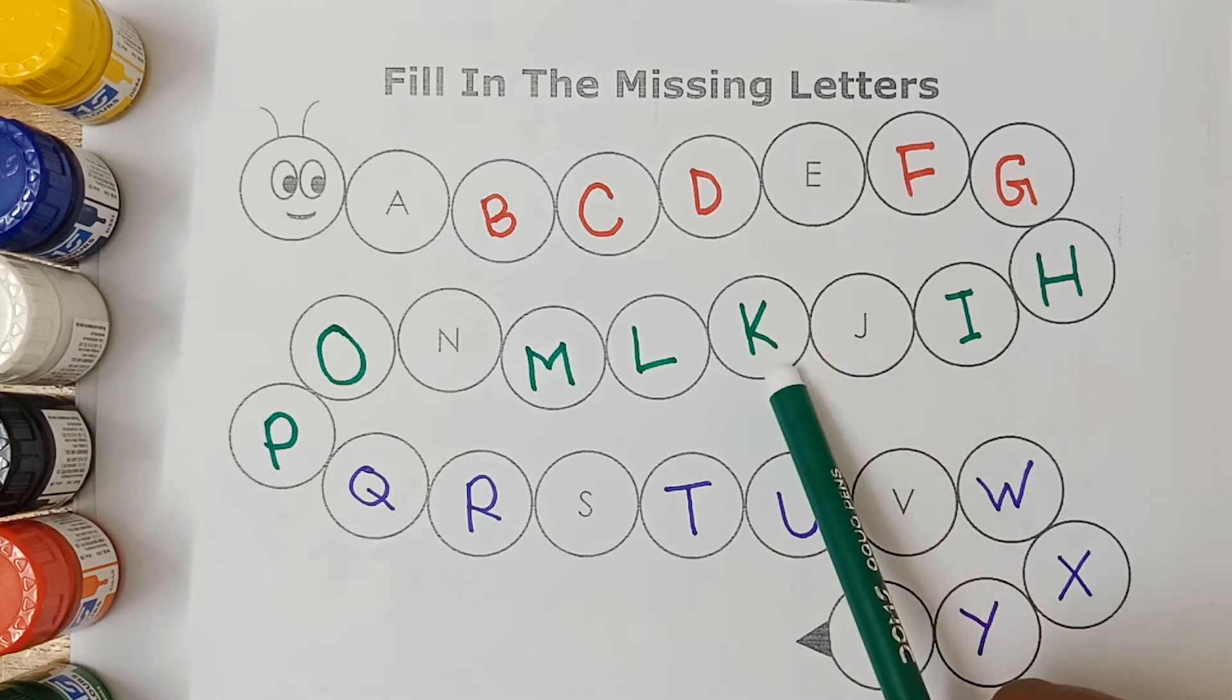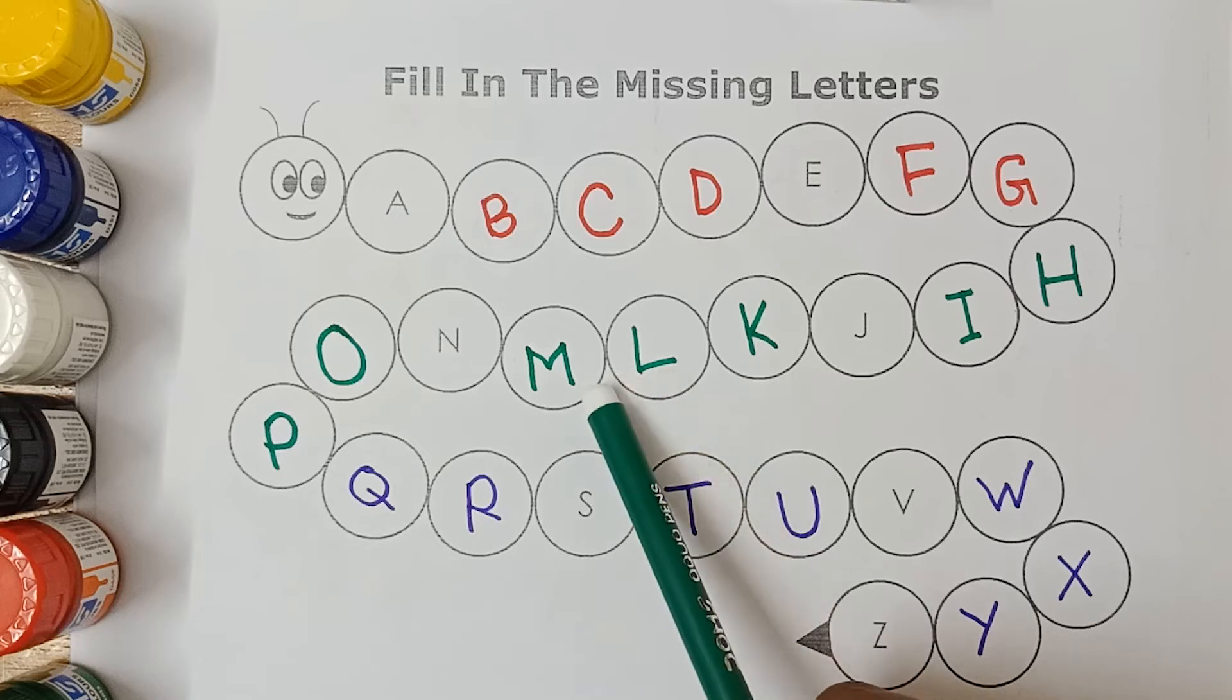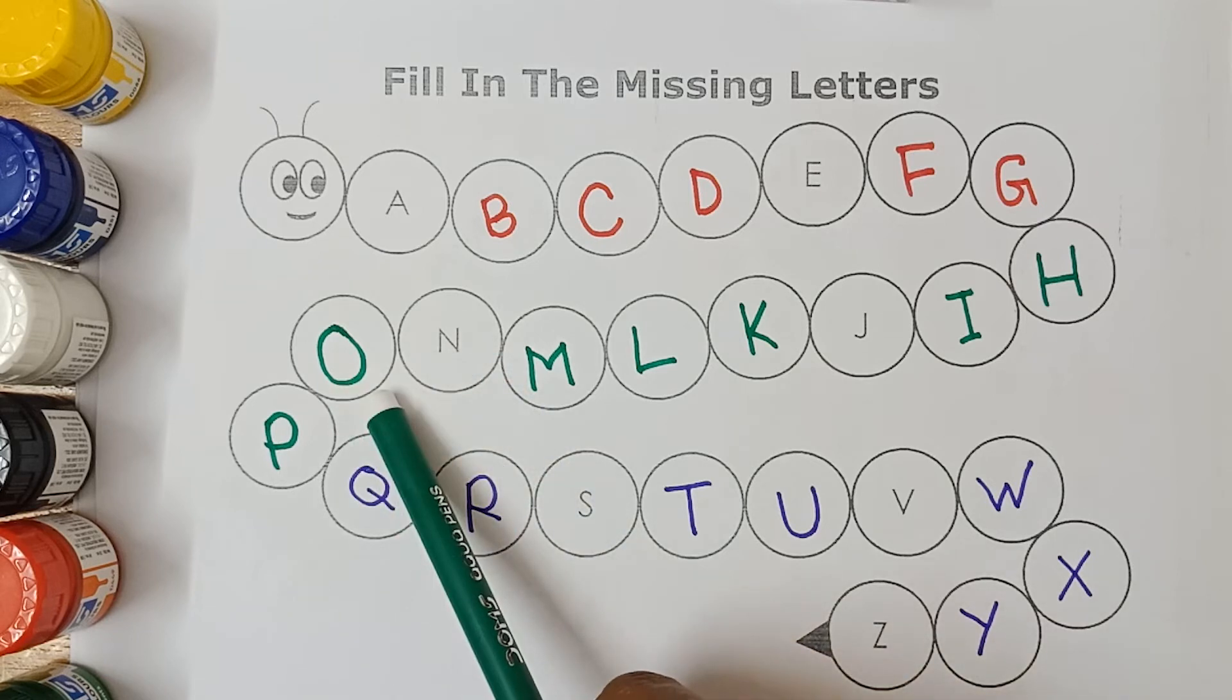K, K for king. L, L for lion. M, M for monkey. N, N for nest. O, O for orange.